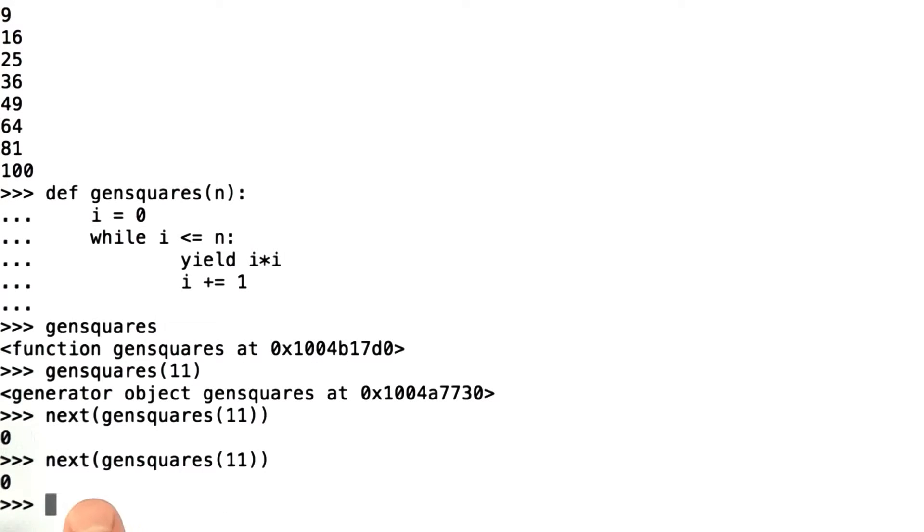And the answer is 0. The reason is because calling gen squares on 11 actually made this object again. And so we've sort of reset everything, and calling next just gives us our first item 0.